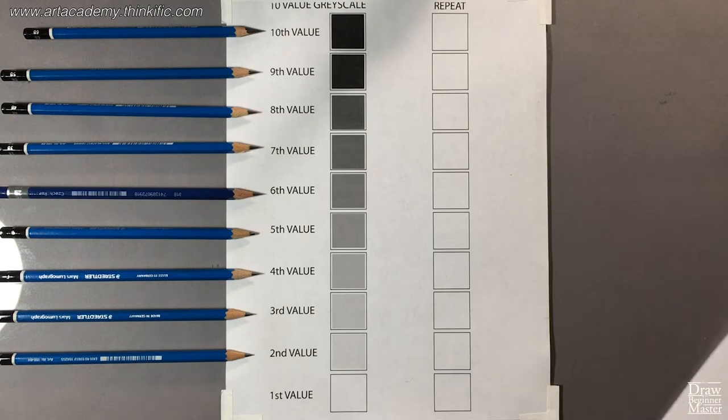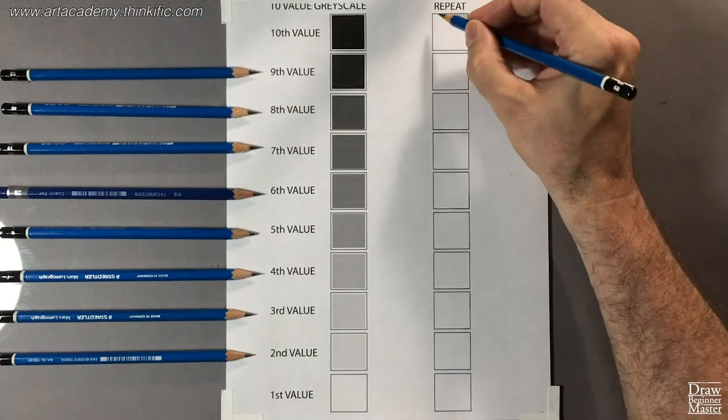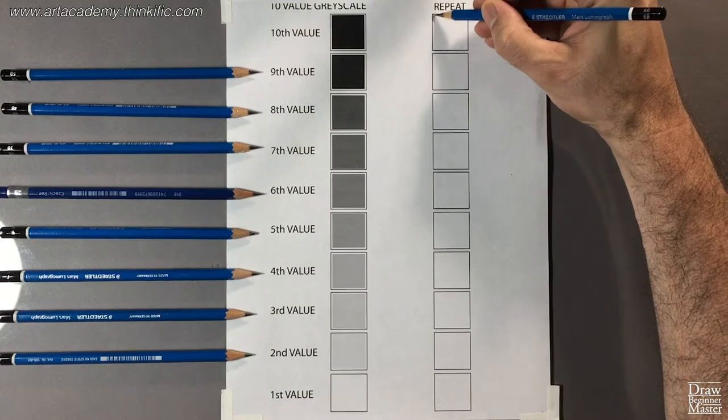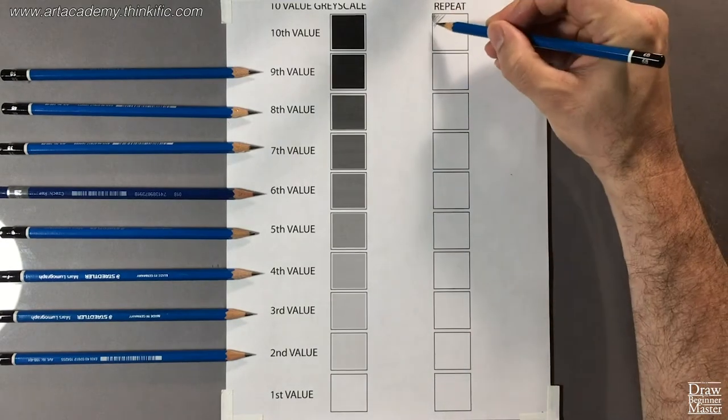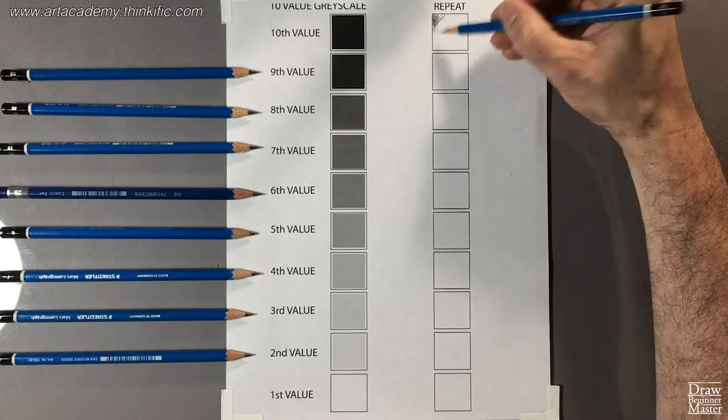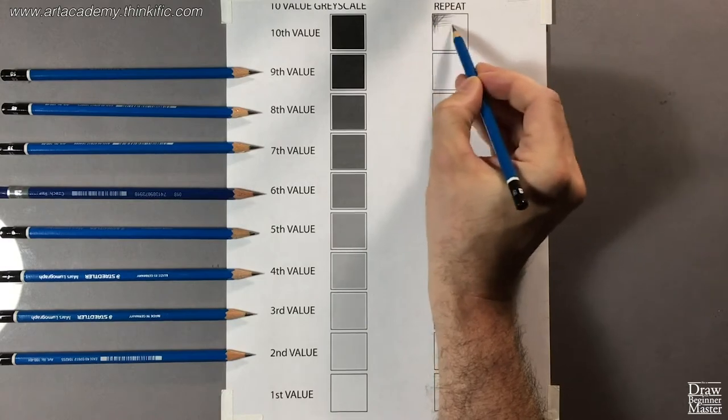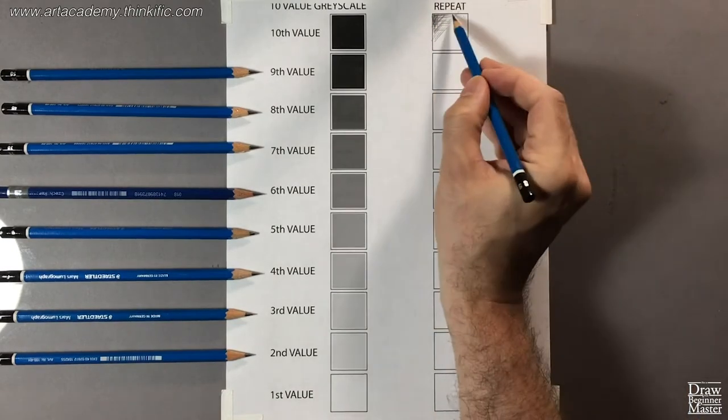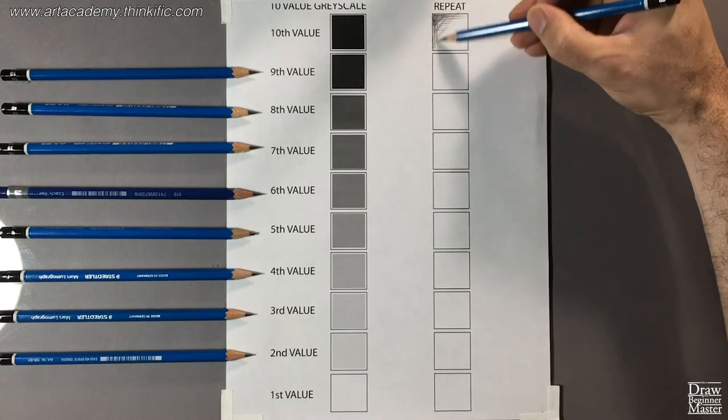Let's begin with 10th value. Using your 6B pencil, begin to shade in the corresponding square and try to match the darkness of the value you see in the box to its left. When it comes to shading dark values, the rule is to gradually build them up. So don't apply full pressure all at once. Don't worry, you'll learn pressure control during this course. For now, try going over and over the area making concentric circles, as I'm doing in my demonstration.